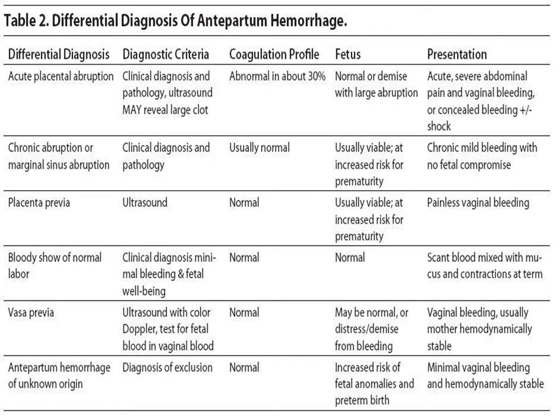To summarize the differential diagnosis of antepartum hemorrhage: the main obstetric causes are placental abruption and placenta previa, with vasa previa as a rare additional entity. There is also antepartum hemorrhage of unknown origin, where a normally implanted placenta exists with minimal vaginal bleeding but no definitive cause is found. Junior doctors should differentiate this from the bloody show of normal labor — a normal finding especially in primigravidas at term, where cervical dilatation and effacement cause disruption of cervical blood vessels, producing blood-tinged mucus mixed with contractions.